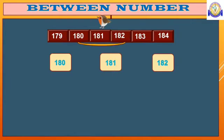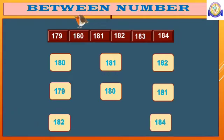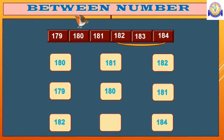What comes between 179 and 181? Between 179 and 181 comes 180. Last one, what comes between 182 and 184? Between 182 and 184, we get 183. That's it. Hope you cleared about before, after, and between numbers.